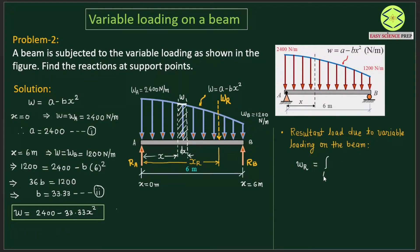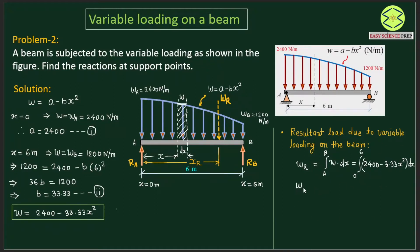WR is given by the integration from A to B of load intensity times dx. With x ranging from 0 to 6, the intensity is 2400 minus 33.33x squared, integrated with respect to dx. Solving this integration gives the value of the resultant load as WR equals 14160.02 newtons.